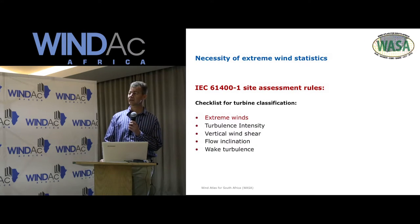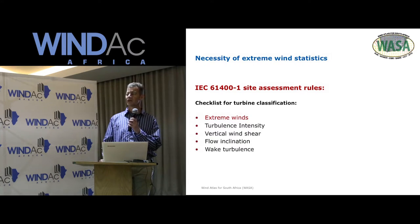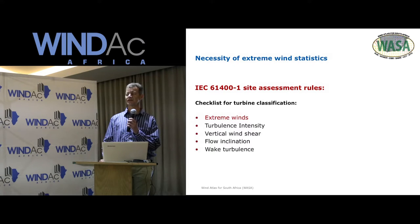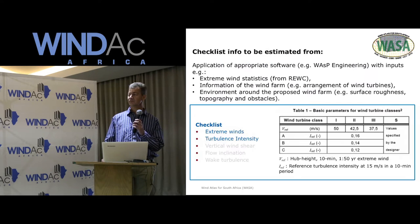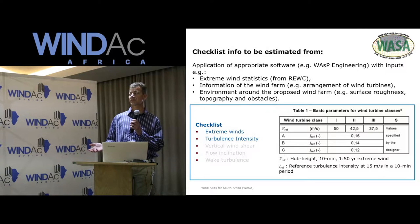These extreme wind statistics are necessary because you have to fulfill the IEC 61400-1 site assessment rules. We have a checklist for turbine classification covering extreme winds, turbulence intensity, vertical wind shear, flow inclination, and wake turbulence. For that, you have to apply prototype software — for example, WASP Engineering, developed by DTU.